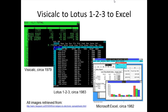VisiCalc, as displayed on the slide, was originally offered as the first computer program available for the Apple II. It caused the computer to be very successful and, according to Wikipedia, it propelled the Apple from being a hobbyist toy to a useful tool for business. The software allowed calculations to be run automatically, and it also allowed for what-if scenarios or hypotheses to be tested.